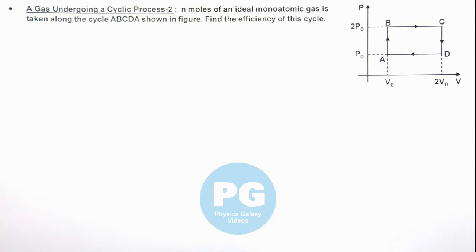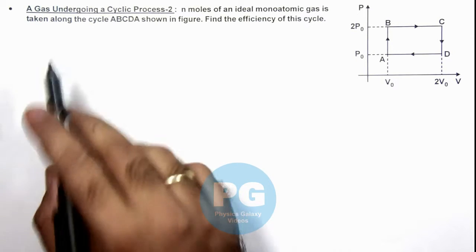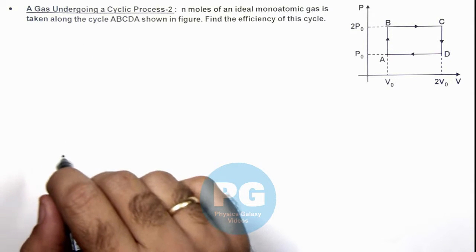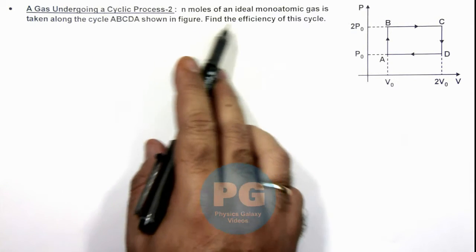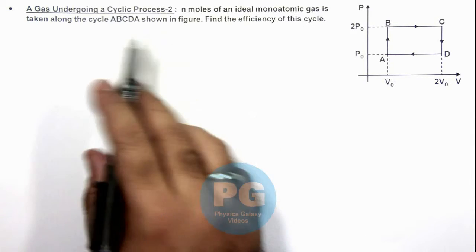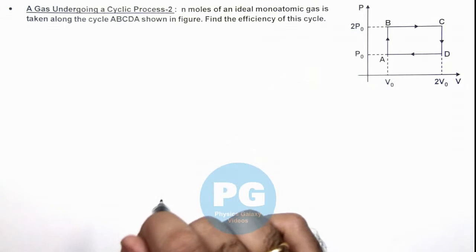In this illustration we'll discuss the second case of a gas undergoing a cyclic process. We are given that n moles of an ideal monatomic gas is taken along this cycle ABCDA, and we are required to find the efficiency of this cycle.